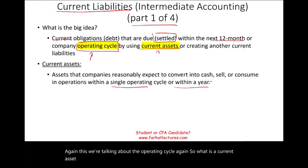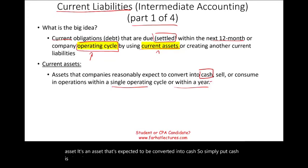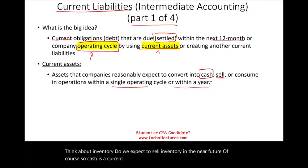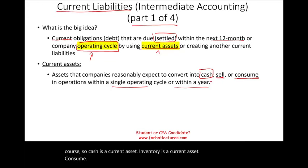A current asset is expected to be converted into cash — cash is already a current asset because it is already cash. Think about inventory: we expect to sell inventory in the near future, so inventory is a current asset. Supplies and prepaid items are current assets because we expect to consume them.